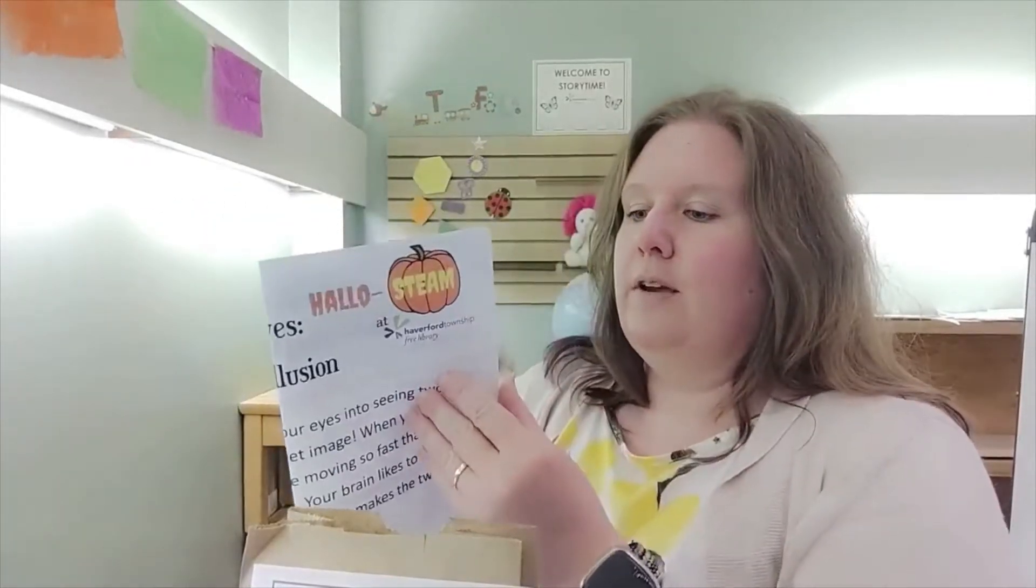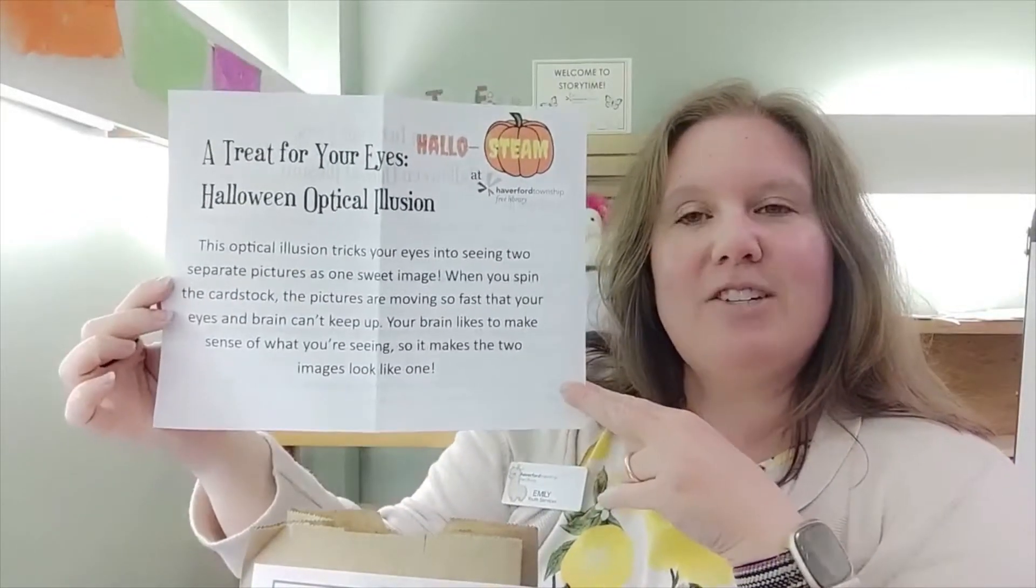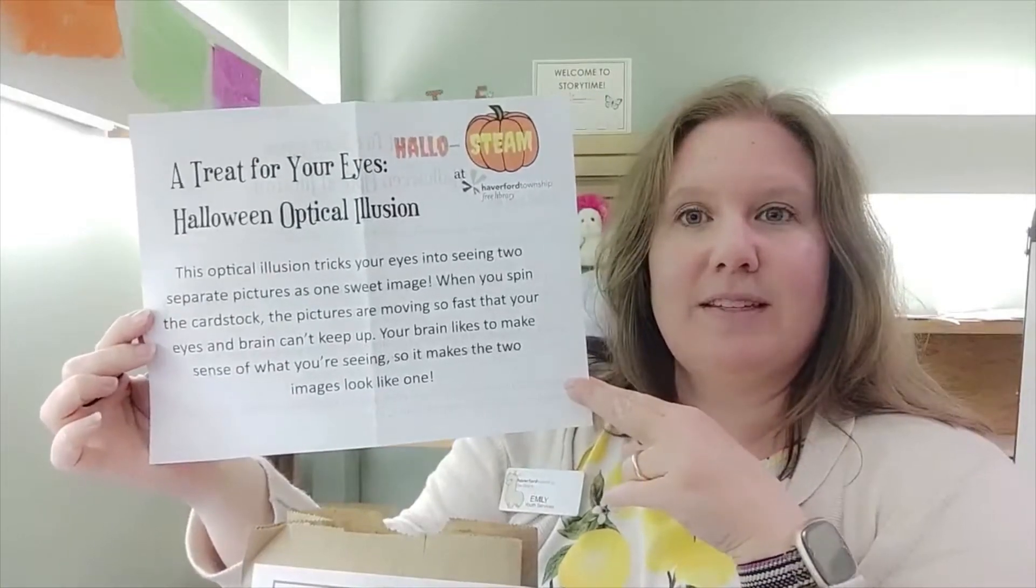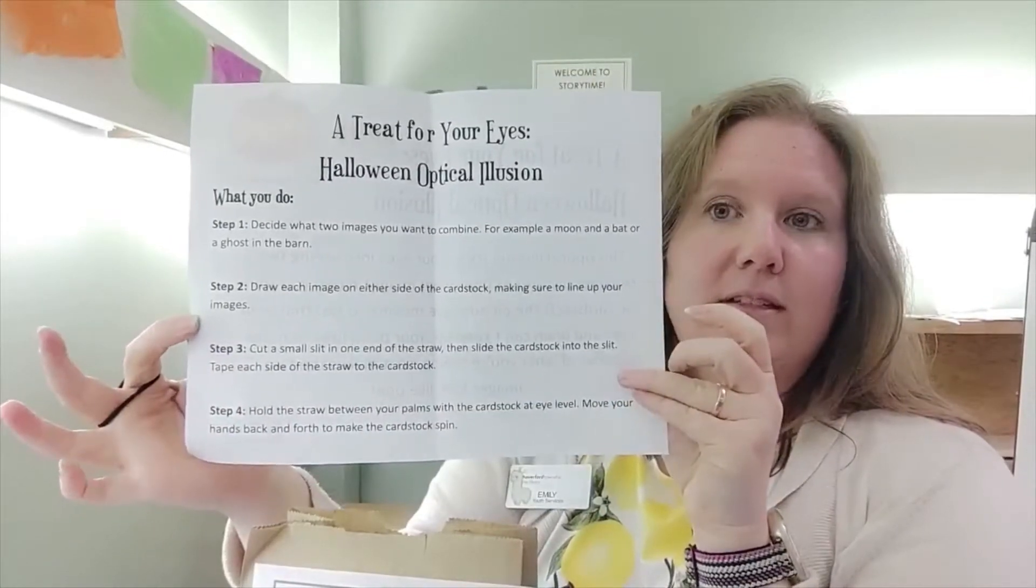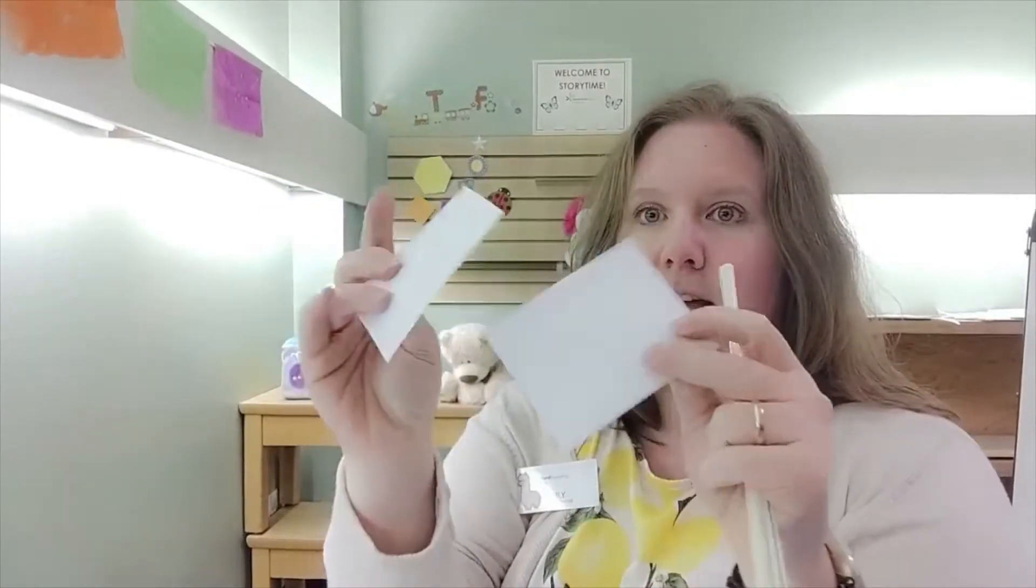This week in your kit you have an explanation of what's going on in this week's activity, which I will explain as I do it. And then just like last week, I have all of the steps that you guys need to do. Also this week in your kit you will get two straws and you will get two pieces of cardstock paper. This is just plain paper but it's a little bit thicker, so it works out really well for this activity.